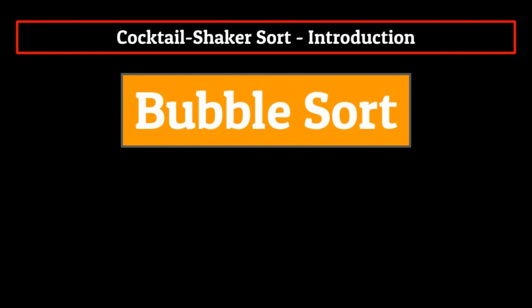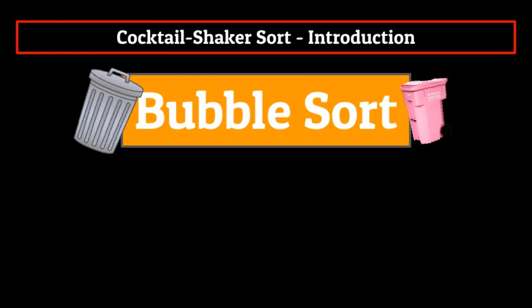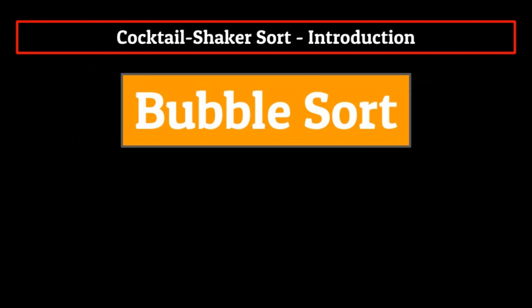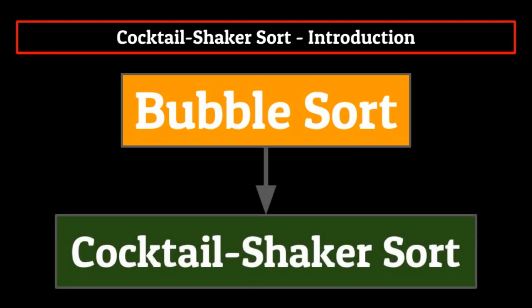Now speaking of bubble sort, we mentioned that the bubble sorting algorithm is, well, extremely bad. The structure of the algorithm leaves a lot to be desired, and improvements can be made to enhance the efficiency of it quite easily. One of these ways we can enhance the algorithm is by converting it into a cocktail shaker sort, which, coincidentally, is the topic for today's video.